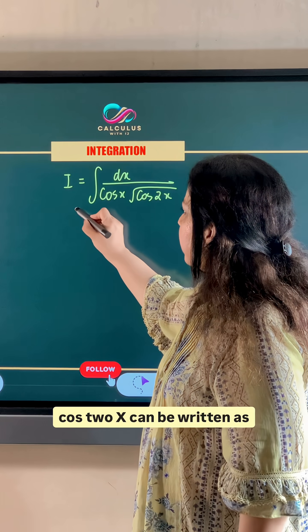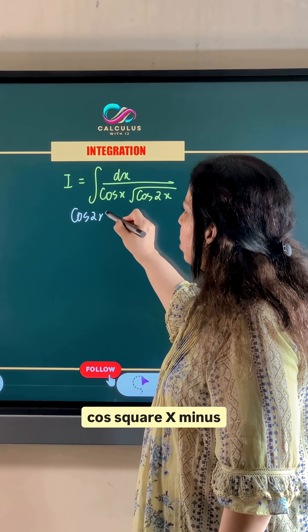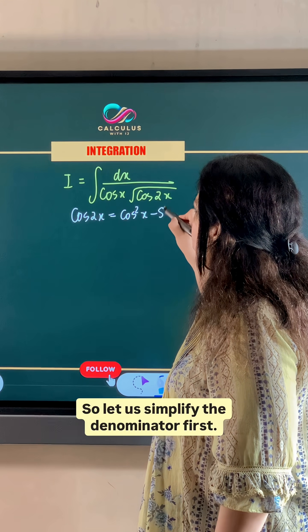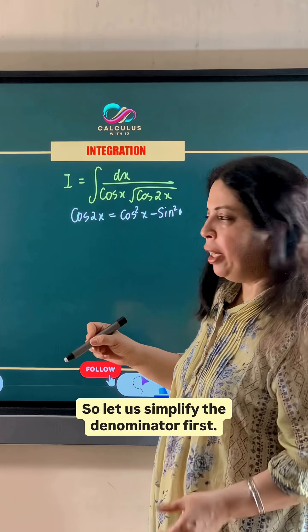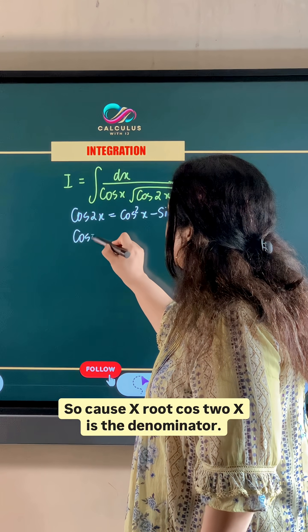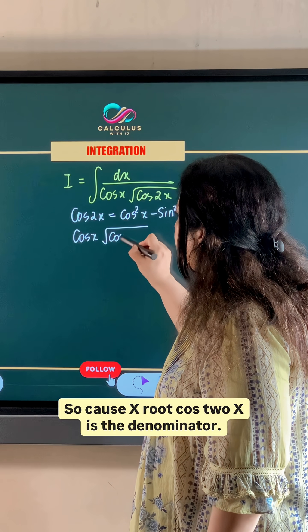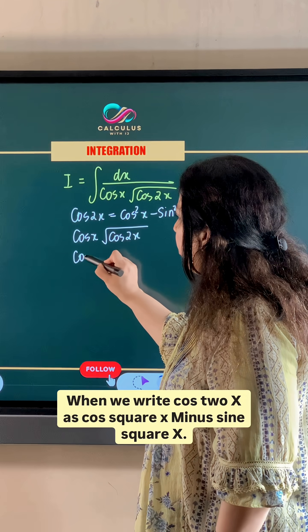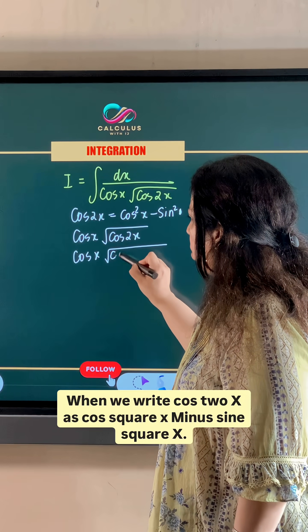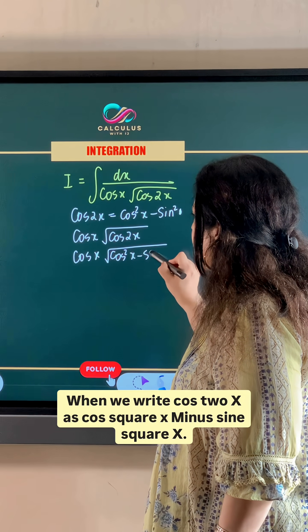cos 2x can be written as cos square x minus sin square x. So let us simplify the denominator first. So cos x root cos 2x is the denominator. When we write cos 2x as cos square x minus sin square x,